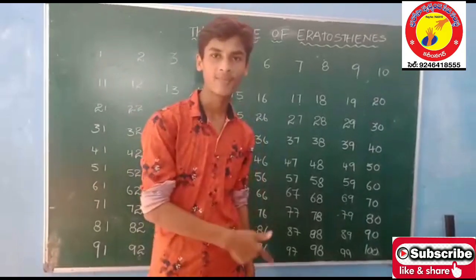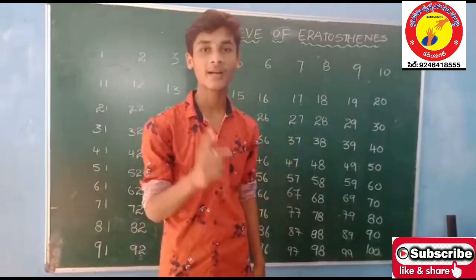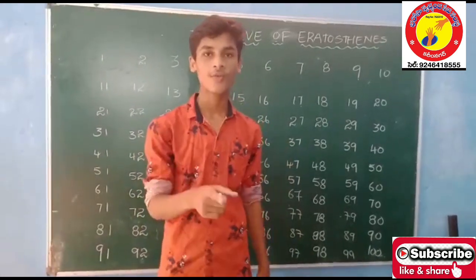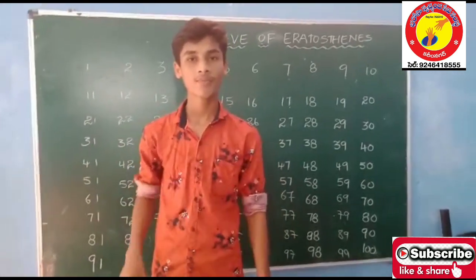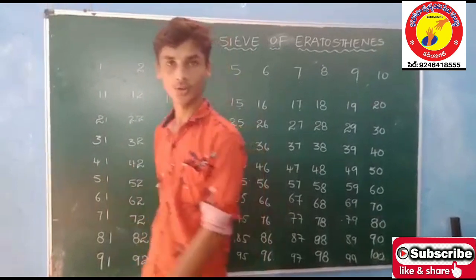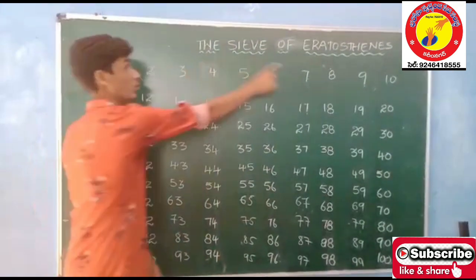From 1 to 100, we know there are 25 prime numbers. So now we have to find them — what are those? Let us start the topic.